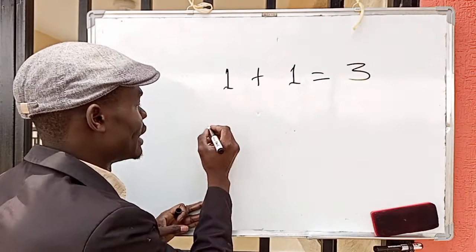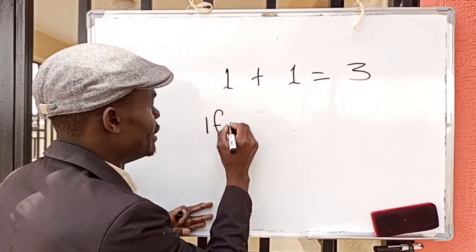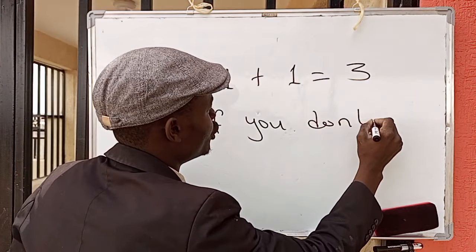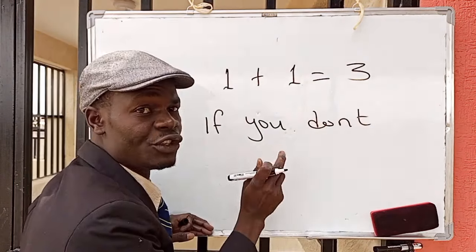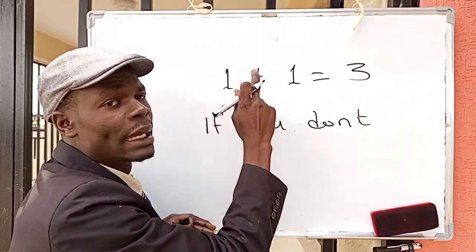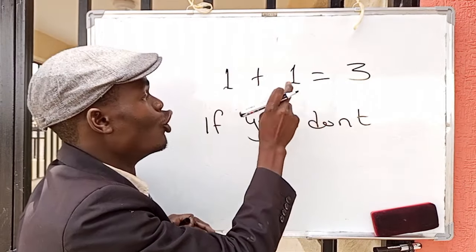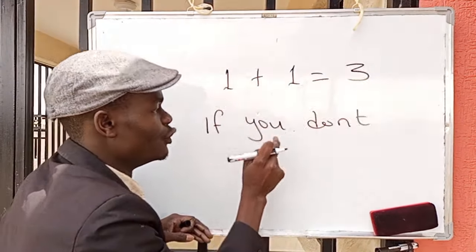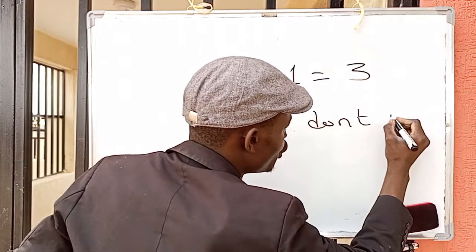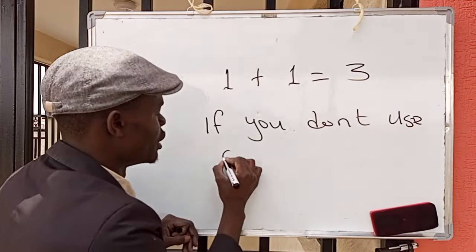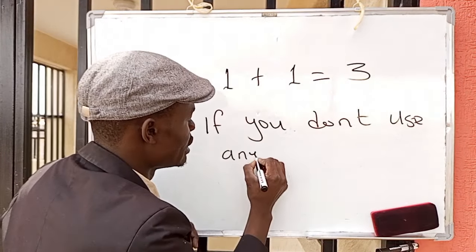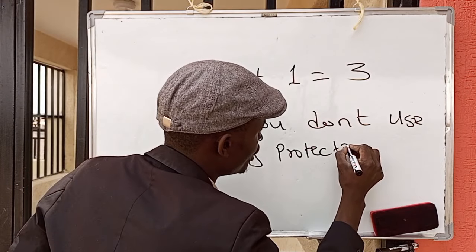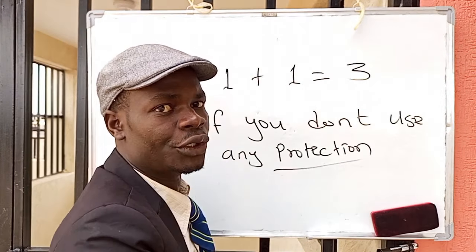We get 3 if you don't. And this 'you' refers to you and him, or you and her. We get 3 if you don't use any protection.